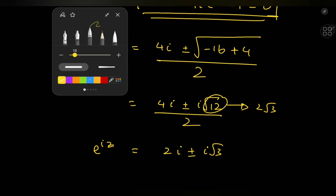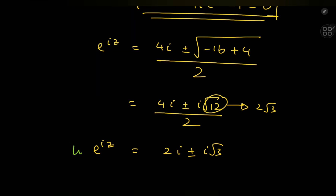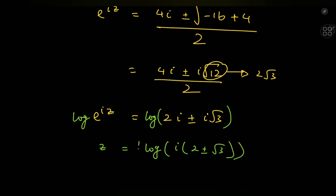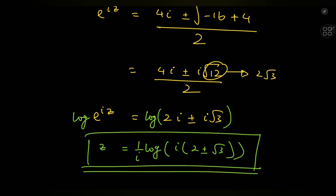To recover z we use logarithms. Applying the complex logarithm gives iz equal to log of i times (2 plus or minus root 3), so z equals (1/i) times the logarithm of i·(2 plus or minus root 3). This is a set of complex numbers satisfying the equation sine(z) = 2.